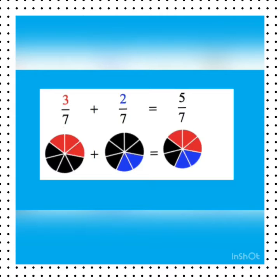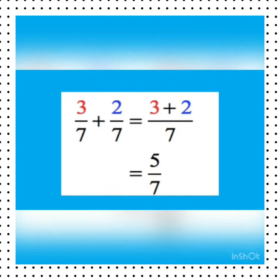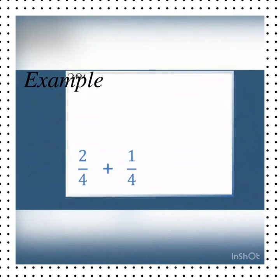After that we will add the shaded parts and we will get 5 shaded parts out of 7, because 7 represents the total number of parts and 5 represents the shaded parts. With the help of this pictorial representation we can easily add any like fractions.